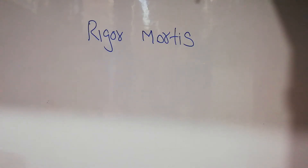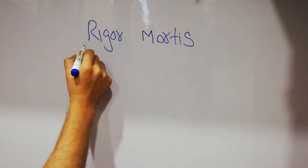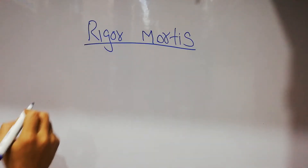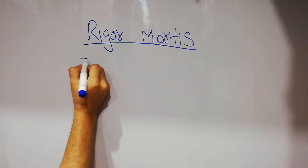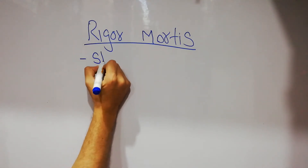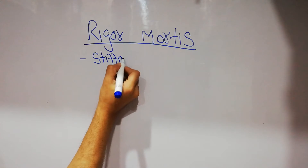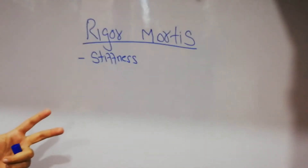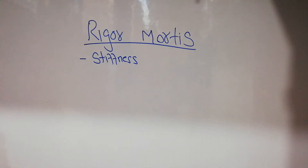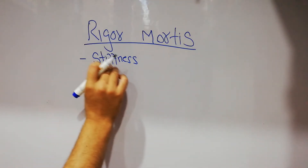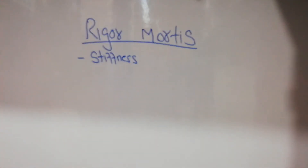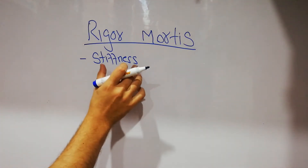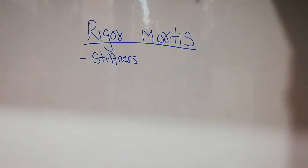In this lecture, we are going to discuss a condition known as rigor mortis. Rigor mortis is a condition in which stiffness of the human body occurs after death. When a human dies, the body starts getting stiff. What is the mechanism of this rigor mortis or stiffness after death?